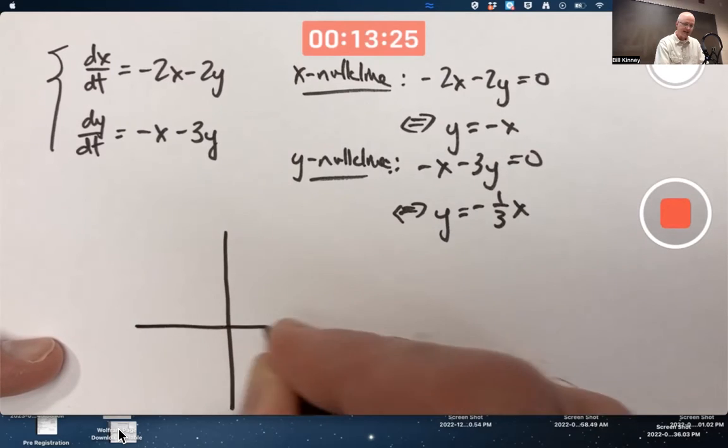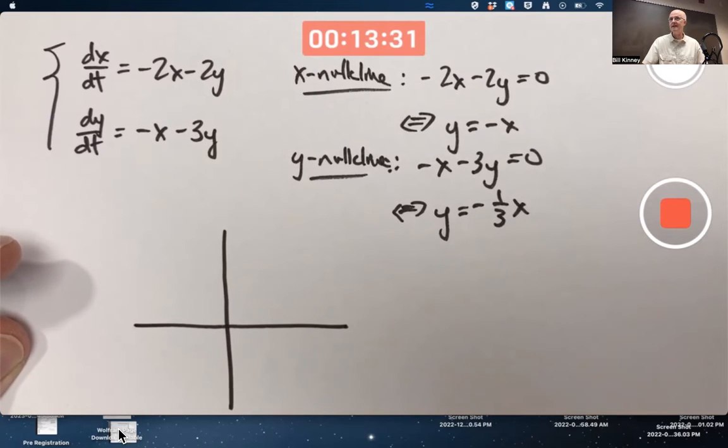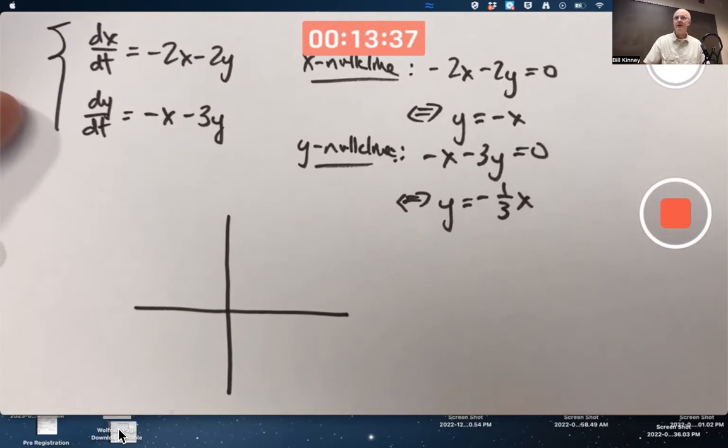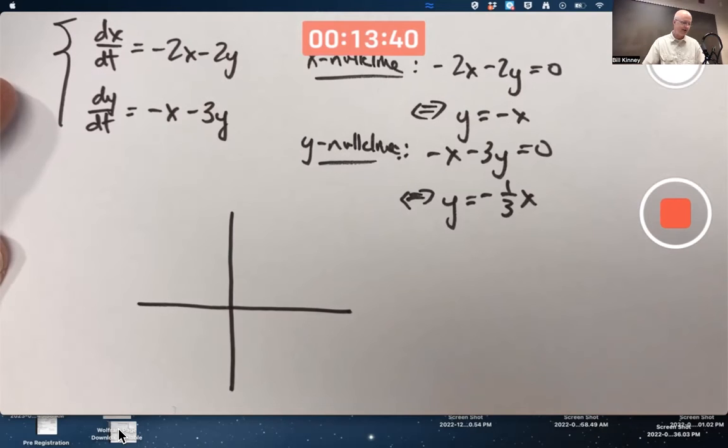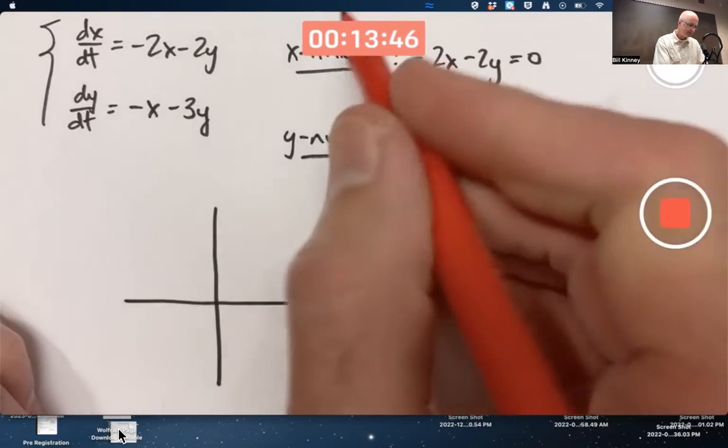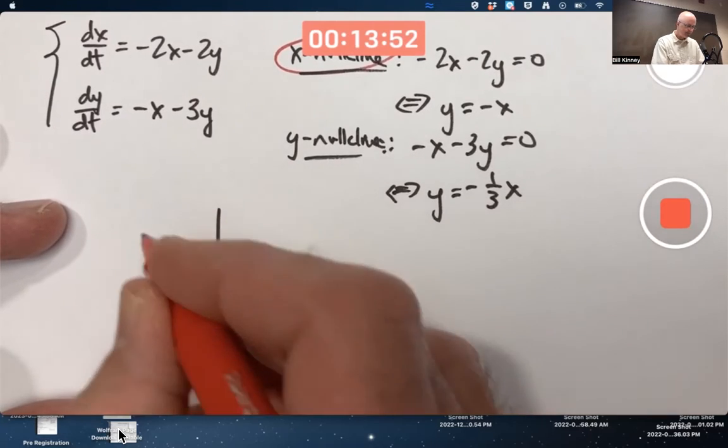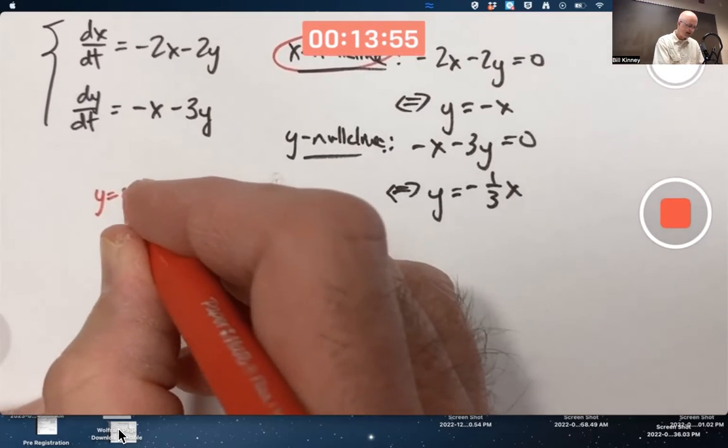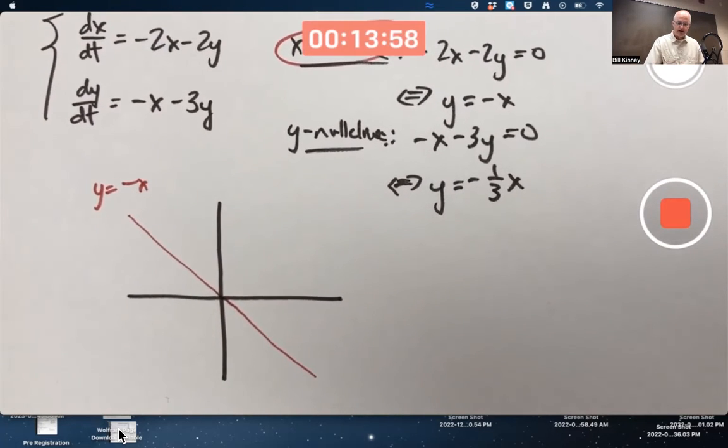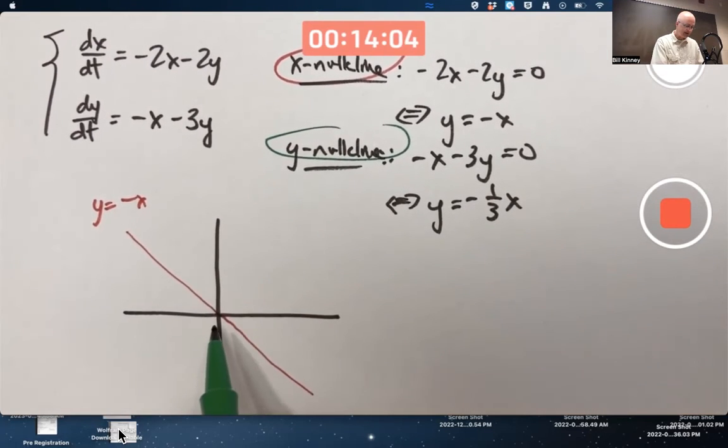So let's go ahead and draw it now. This is tricky. People always have trouble drawing phase planes accurately. It's one of the most difficult things for people to get perfect scores on exam problems, including in-class exams. So pay good attention here. The x null cline, I'll draw in red. Y = -x, the line looking like this. The y null cline, I'll draw in green. Y = -1/3 x, still going through the origin, but the slope is -1/3. So maybe about like this.